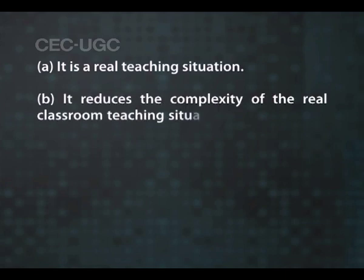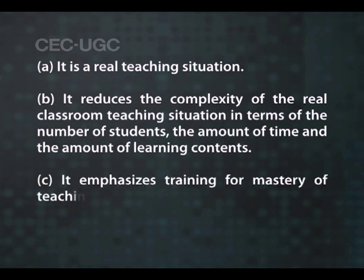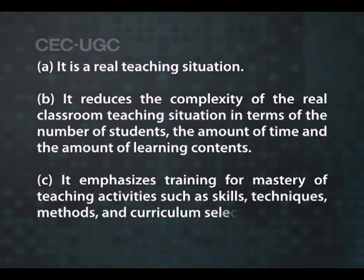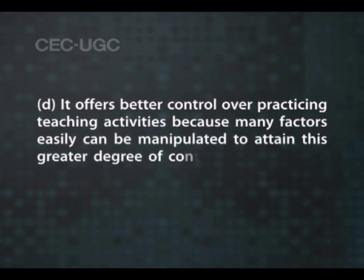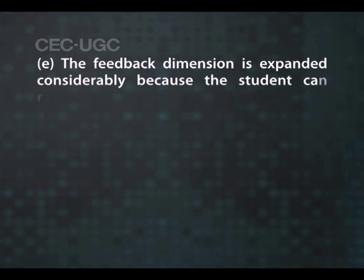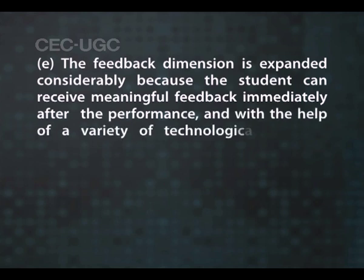Let us consider the characteristics of micro-teaching in the words of the originators of the idea. According to Allen and Ryan (1969), micro-teaching has the following characteristics: It is a real teaching situation. It reduces the complexity of real classroom teaching in terms of the number of students, the amount of time, and the amount of learning content. It emphasizes training for mastery of teaching activities such as skills, techniques, methods and curriculum selection. It offers better control over practicing teaching activities because many factors can be manipulated to attain greater degree of control in the training program. The feedback dimension is considerably expanded because the student can receive meaningful feedback immediately after performance with the help of a variety of technological teaching media.